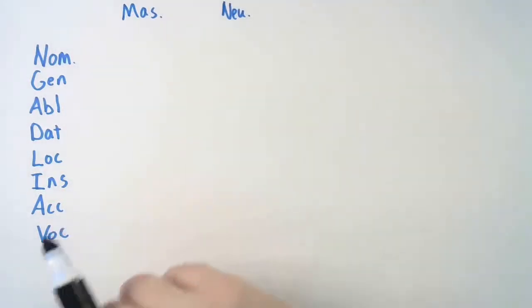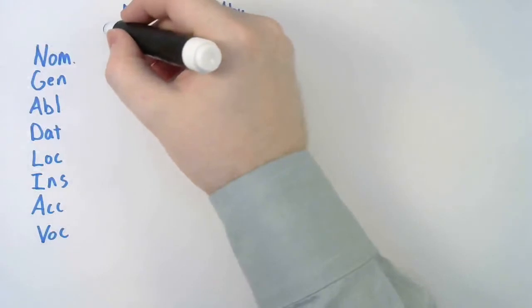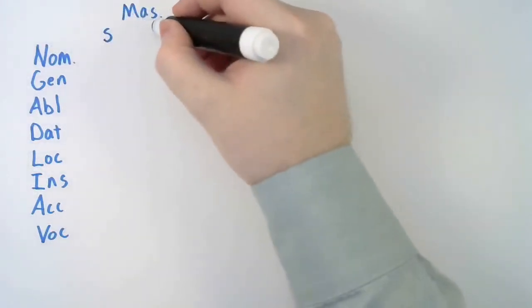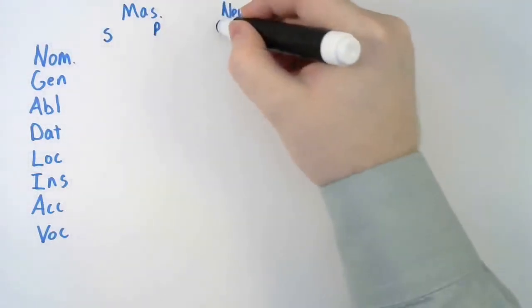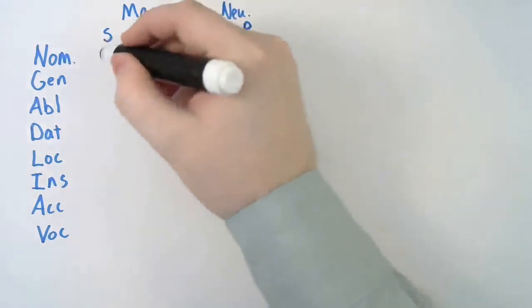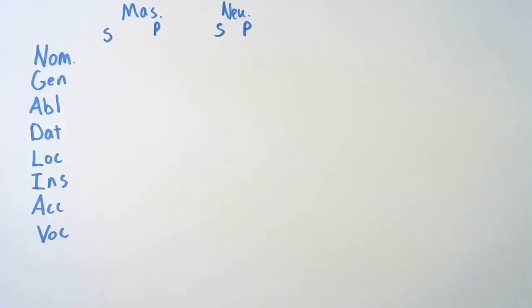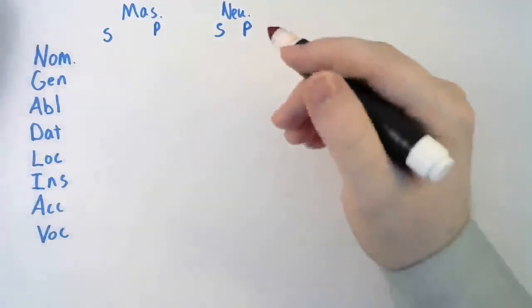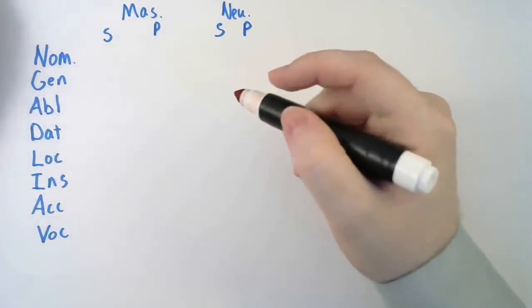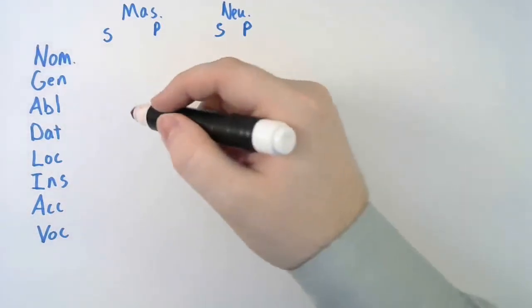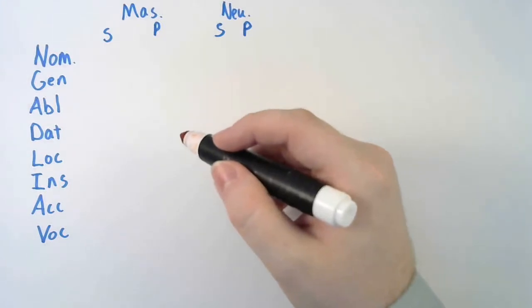Now, what else do we need? We need number. These are going to be singular endings, and these are going to be plural endings. Singular, plural. So, I've got me a chart here. Now that I have my chart, let's get to work writing out some endings. Get a different color, so it stands out a little better against the blue chart pieces.